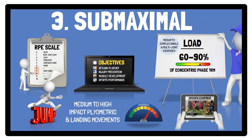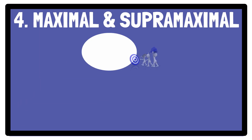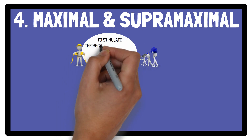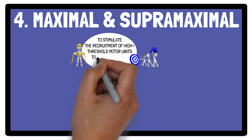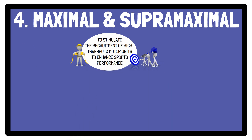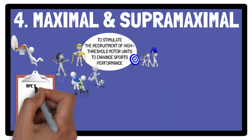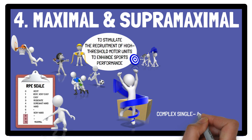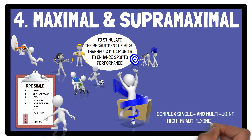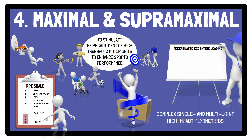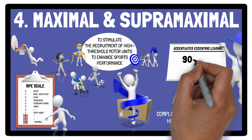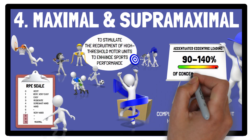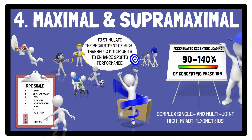Regarding maximal or super-maximal eccentric exercises, the objective here is to stimulate the recruitment of high-threshold motor units with the purpose of ultimately enhancing sports performance. The intensity is suggested to be 8 or more on the RPE scale, with body weight used to execute complex single and multi-joint high-impact plyometrics, as well as accentuated eccentric loading using loads of 90 up to 140% of the concentric phase 1RM. Due to the intense nature, this level is only suggested for experienced strength trainers and higher-level athletes.